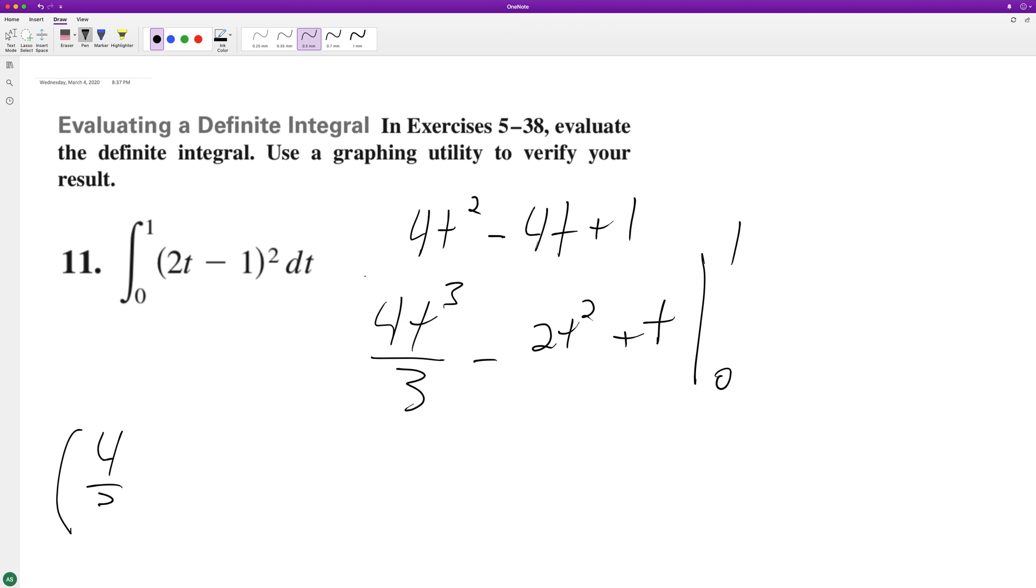1 through there, we get 4 thirds minus 2 plus 1, minus when we run 0 through here, we just get 0, which is kind of nice. So it ends up being 4 thirds minus 2 plus 1, minus 1, which is equal to 1 third. And that's it. I hope this helped you out.